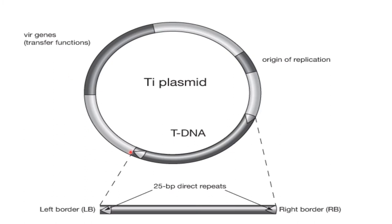The T-DNA is stably integrated into the nucleus of the plant cell genome. Genes encoded within it necessary for biosynthesis of plant growth hormones like cytokines and auxin result in formation of characteristic tumor growth associated with crown gall disease. The T-DNA also encodes opines — napoline or octopine — that provide Agrobacterium with an exclusive nitrogen source, giving Agrobacterium carrying the Ti plasmid a competitive advantage.